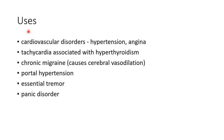Now let us see about the uses of propranolol. It is used to treat cardiovascular disorders like hypertension and angina. It is used in the treatment of tachycardia associated with hyperthyroidism. It is also used to treat chronic migraine, because propranolol causes cerebral vasodilation, which decreases the incidence of migraines.